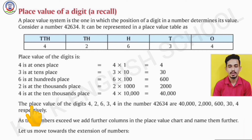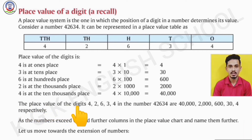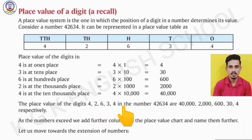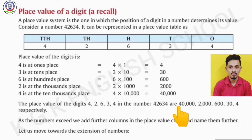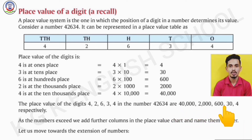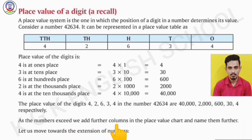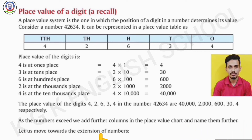The place values of the digits 4, 2, 6, 3, 4 in the number 42,634 are 40,000; 2,000; 600; 30; and 4 respectively. As the numbers exceed these digits, we add further columns in the place value chart and name them further. Let us move towards the extension of numbers.